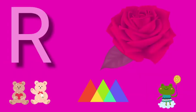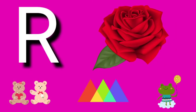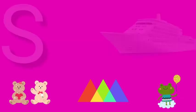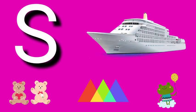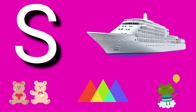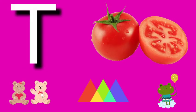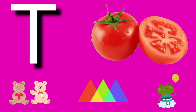R for rose, rose means gullab. S for sheep, sheep means bher. T for tomato, tomato means tomato.